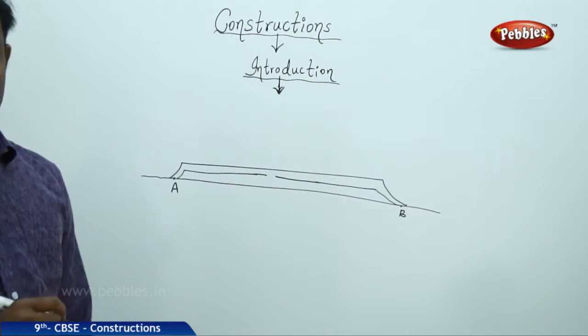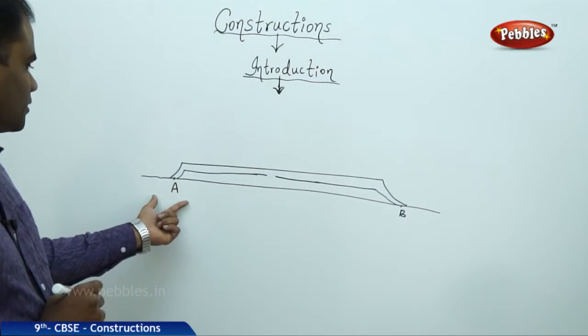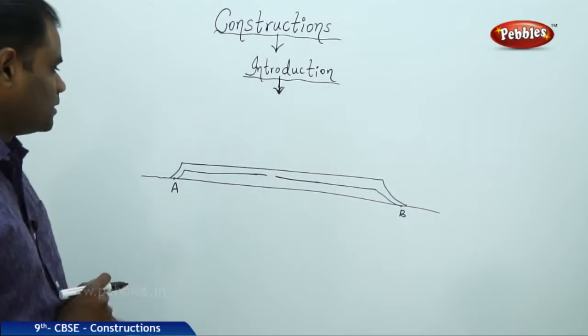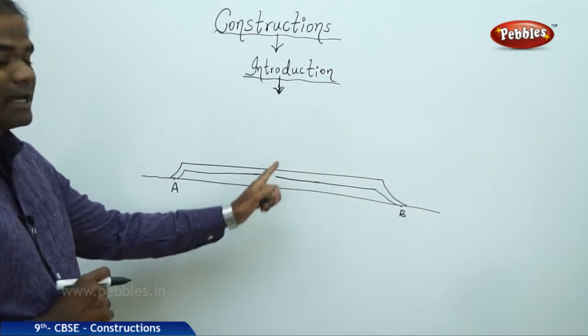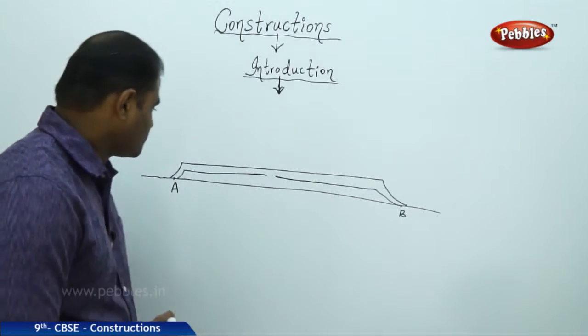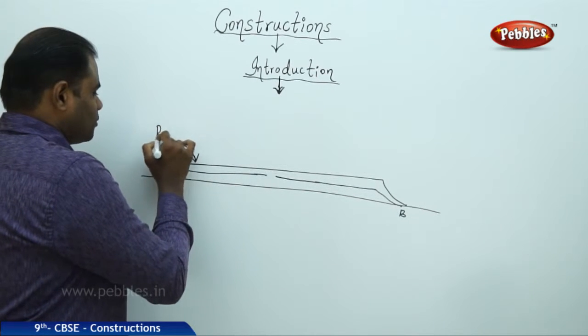Such a situation in which the end of the bridge on the left is A and the end of the bridge on the right is B, which is a line segment AB at which the engineer would like to build a pillar exactly in the middle of the bridge. So here I have the bridge problem.